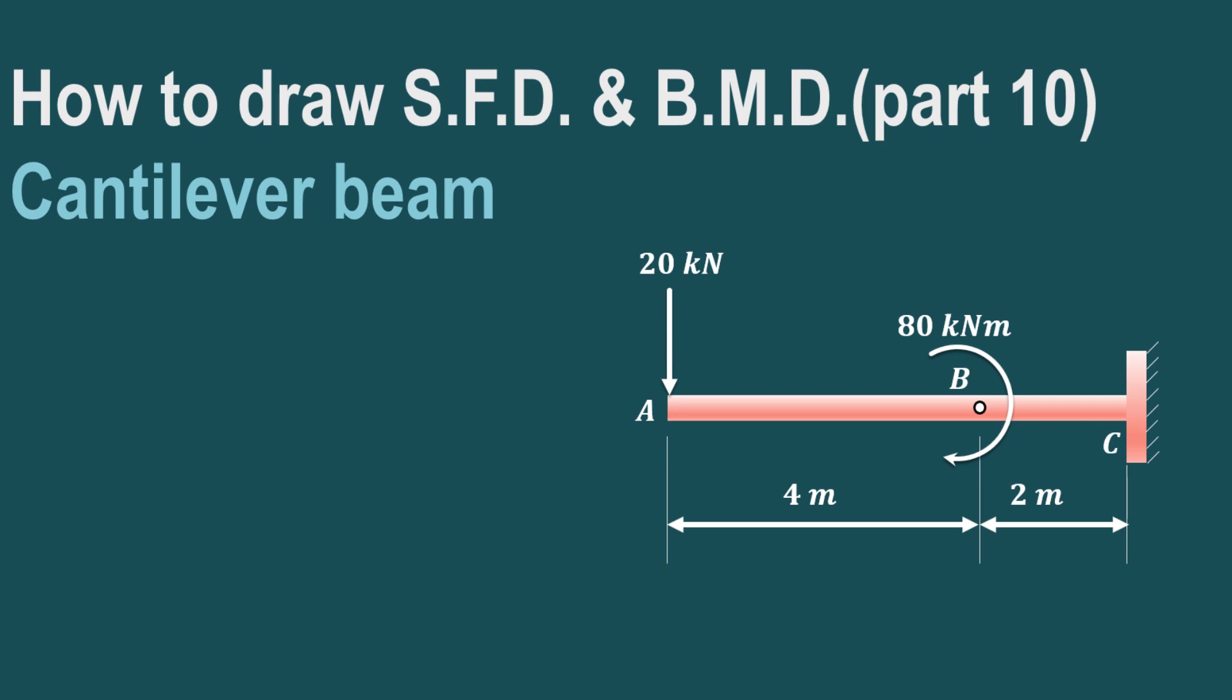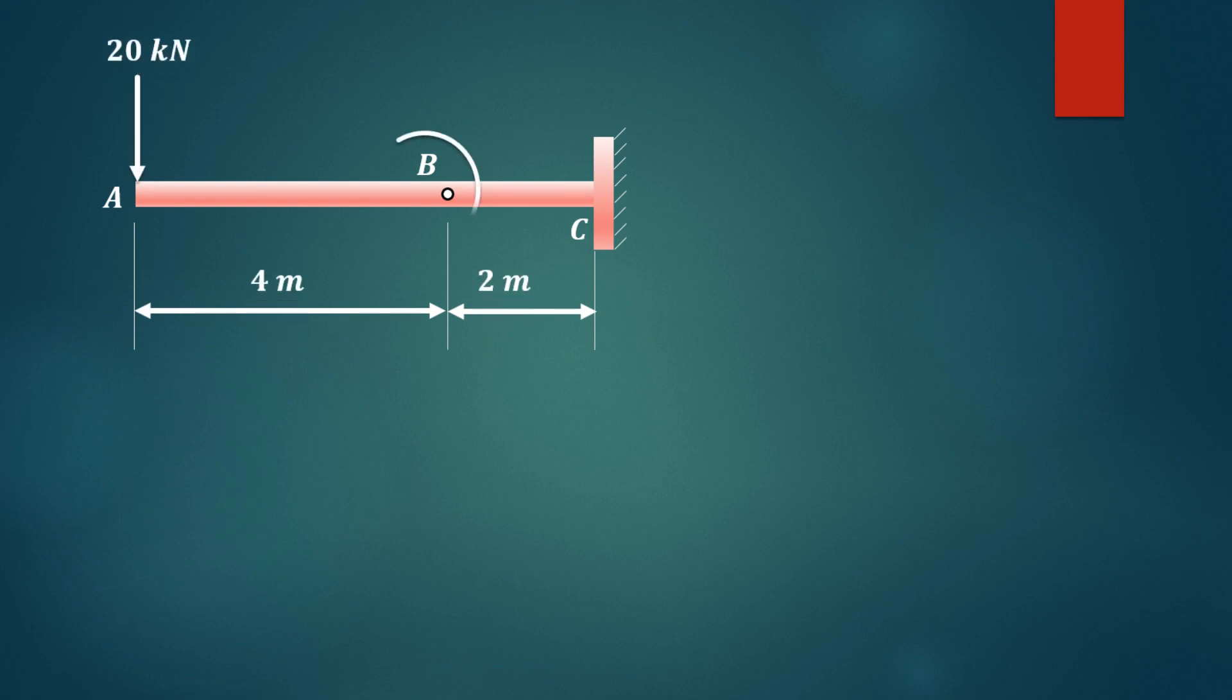In this video we will try to understand how to draw shear force diagram and bending moment diagram in case of cantilever beam. The arrangement of the beam is as shown here. We have a point load of 20 kN acting at the free end and a clockwise moment of 80 kNm acting at point B.